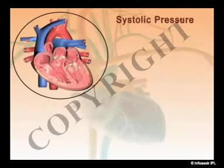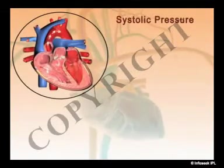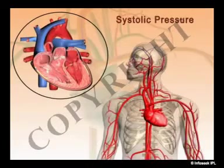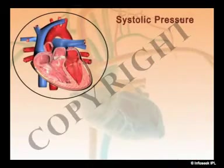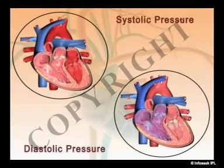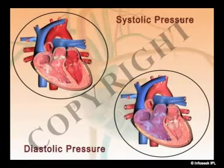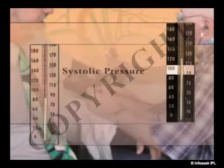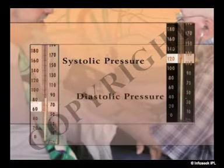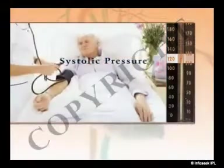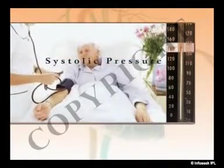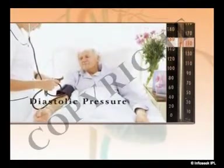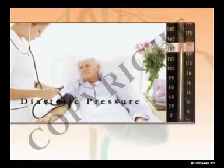Systolic pressure indicates the pressure that the heart generates to pump blood to the rest of the body, whereas diastolic pressure refers to the pressure in the blood vessels between heartbeats. Blood pressure is expressed in two separate figures: the first indicates systolic pressure and the second diastolic. It is known that systolic pressure increases as we grow old, while diastolic pressure begins to decline after 60 years.